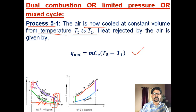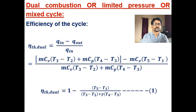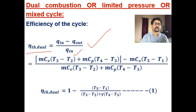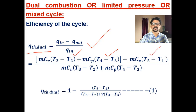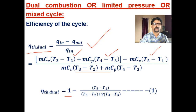Now let us derive an expression for the efficiency of the dual combustion cycle. The general expression is η_th = (Q_in − Q_out) / Q_in. Substituting: Q_in has two parts — constant volume heat addition m·Cv·(T3 − T2) and constant pressure heat addition m·Cp·(T4 − T3) — and Q_out = m·Cv·(T5 − T1). After simplification, this gives 1 minus (T5 − T1) divided by [(T3 − T2) + γ·(T4 − T3)].